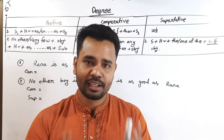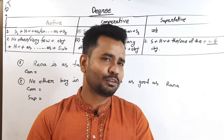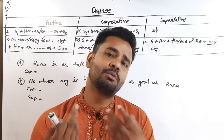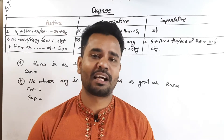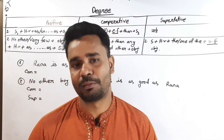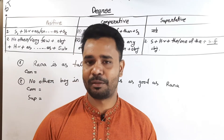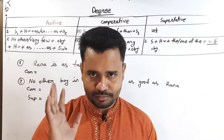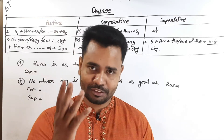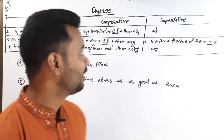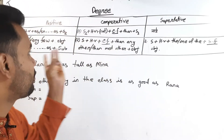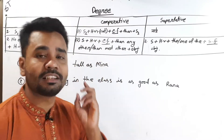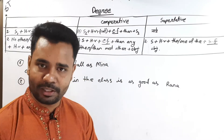Number two: the action rules will be done. Here it is — the degree: the 3rd, positive, comparative and superlative.